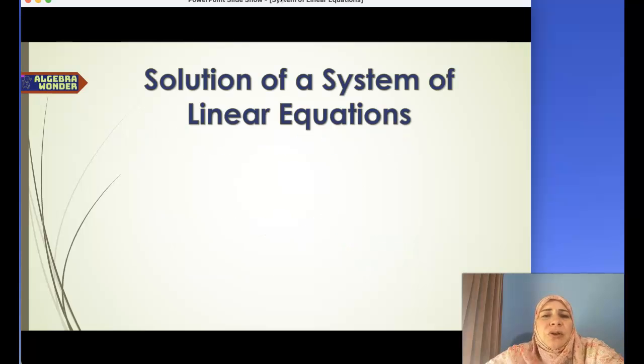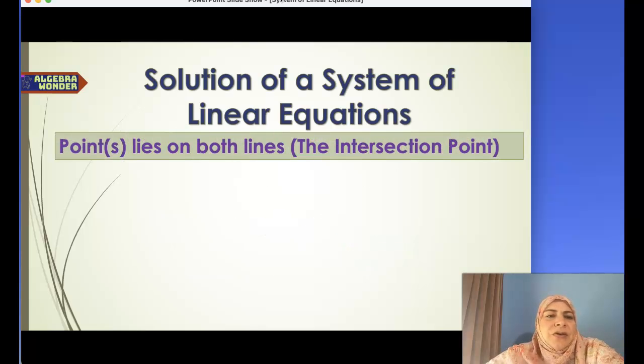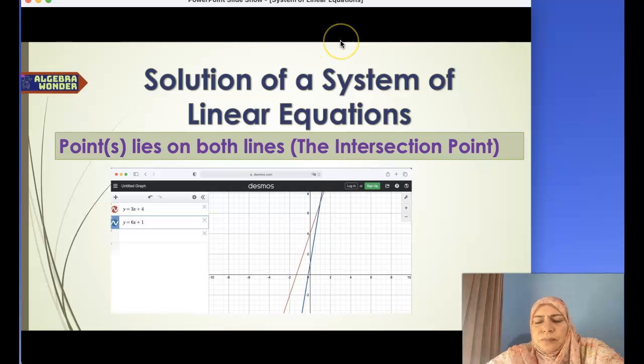What is the solution of a system? The solution is the point of intersection, the point that lies on both lines. In this example, the point (1, 7) is a solution. Why is it a solution? Because this point makes the two equations true. It lies on both lines. This is why we call it the point of intersection.